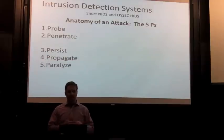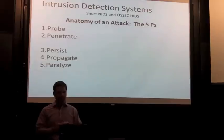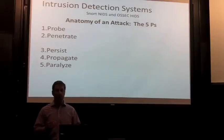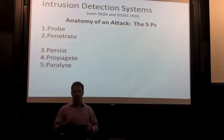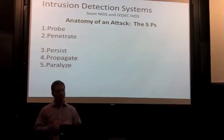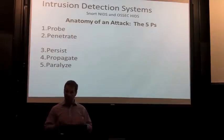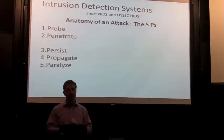The second step is penetration of your network, using the recon gathered in the first step to enter. The third step, according to the O'Reilly model, is persistence. Once someone enters your network, they want to make sure they don't have to go through steps one and two again. They want to create a back door — that could be opening an RDP port or creating a user account that allows them to log in undetected.